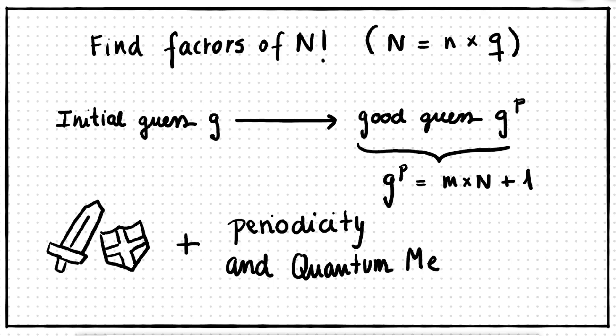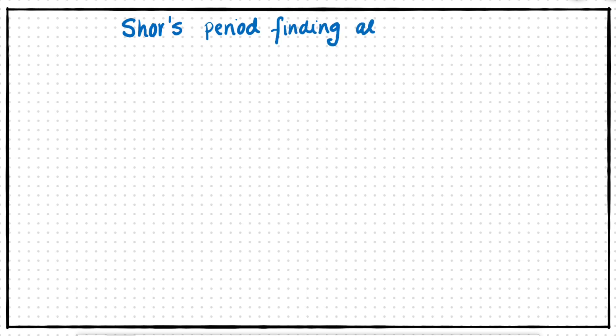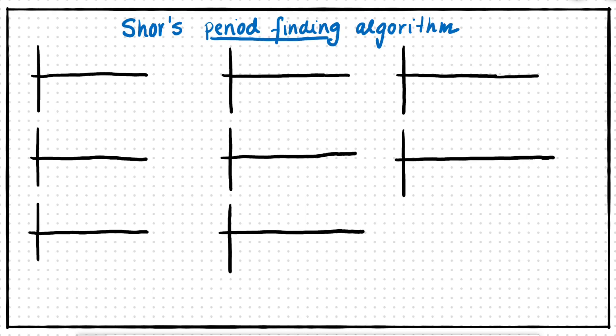In this video, we will show you how periodicity in quantum mechanics can help us solve this problem. The crux of what we want to do is to use the concept of superposition of all possible answers at once, arranged such that all the wrong answers destructively interfere with each other. In fact, they are arranged such that there is a periodicity to the right answers.